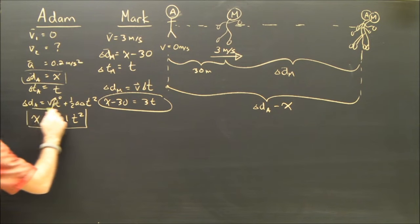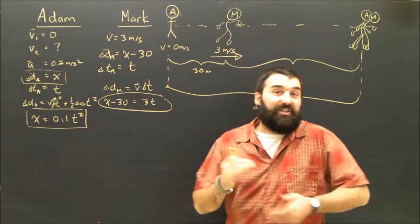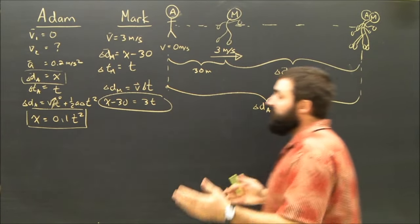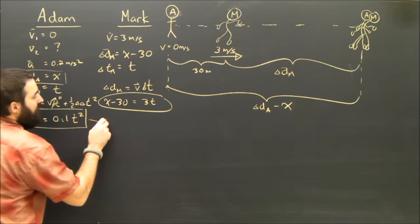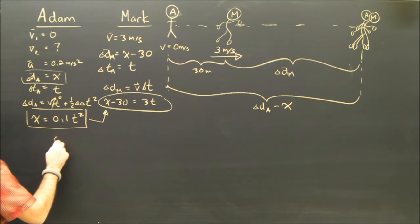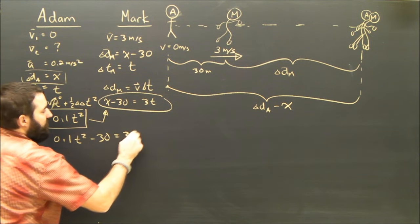And I have taken a shortcut. I have not followed my own advice. I didn't show the substitution. I skipped a step. Hopefully, I didn't make a mistake. Putting the two equations together, if I sub this equation into that equation, I will get that 0.1t squared minus 30 equals 3t.